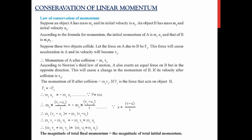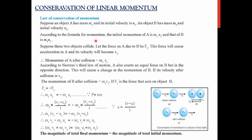Next, we discuss the conservation of linear momentum. It states that the total magnitude of final momentum equals the total magnitude of initial momentum. To prove this mathematically, suppose object A has mass m1 and initial velocity u1, and object B has mass m2 and initial velocity u2. By the momentum formula p = mv, the initial momentum of A is m1u1 and of B is m2u2.